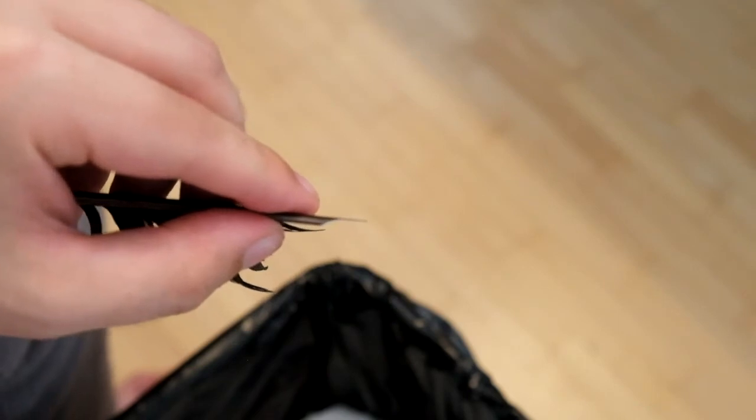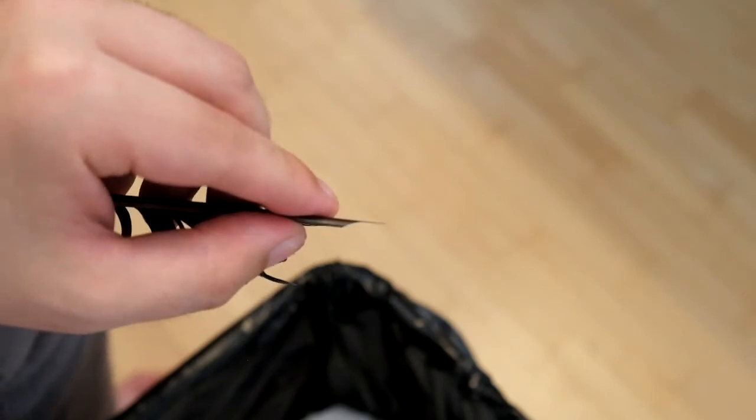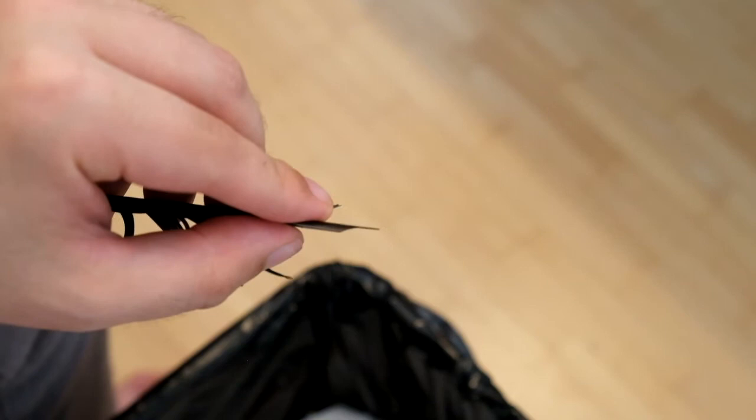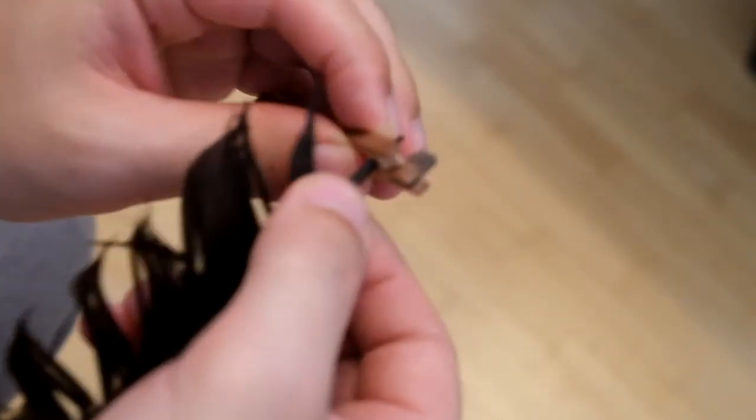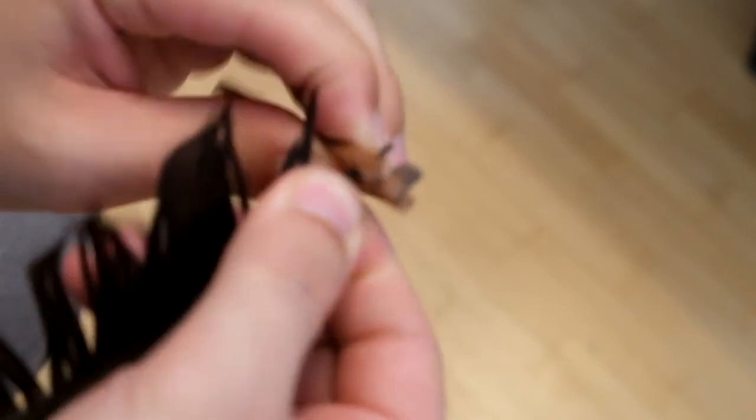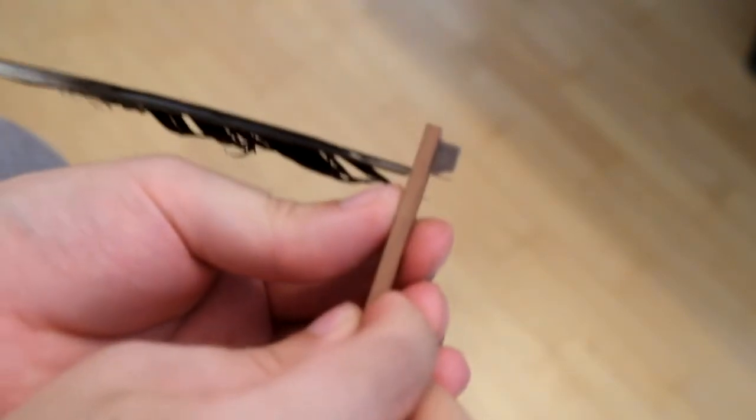Try to remove the pith in such a way that a slope is created. This will ensure the plectrum is nicely wedged into the mortise. Pushing the feather through the mortise like this, you will already feel the resistance it gives.